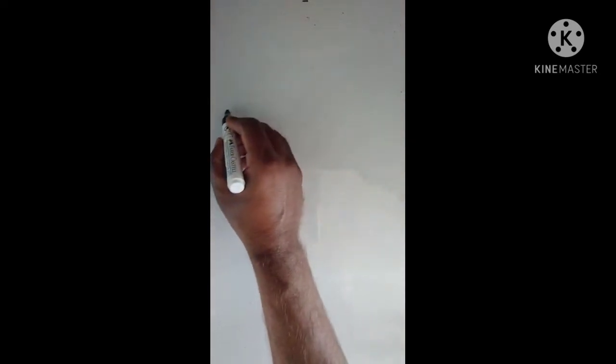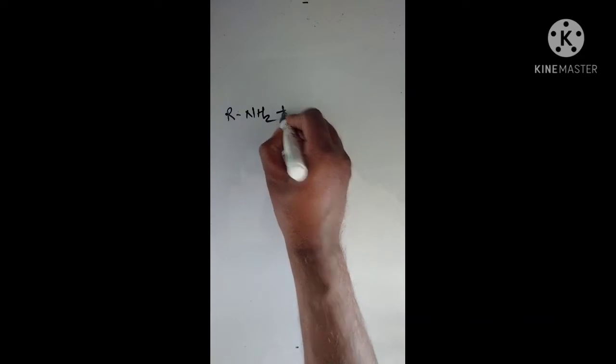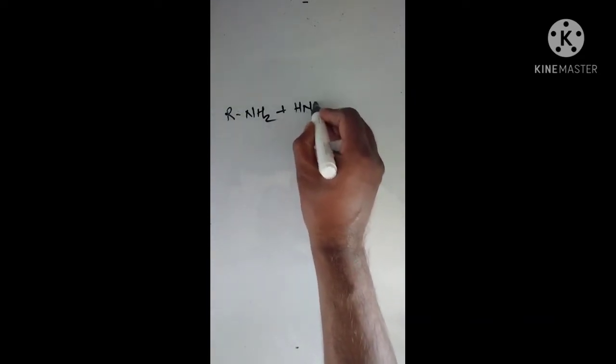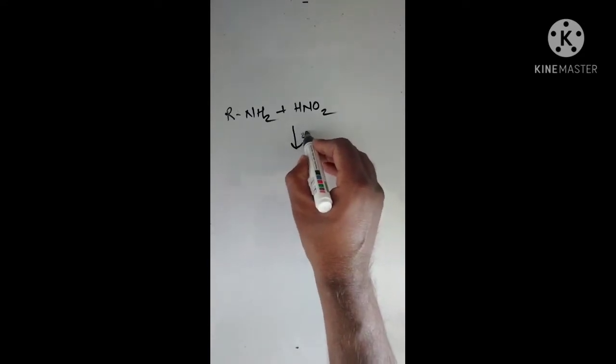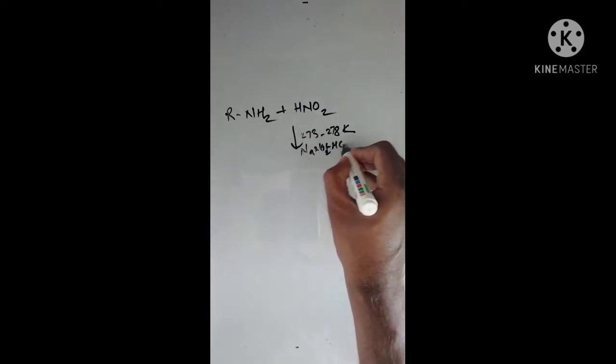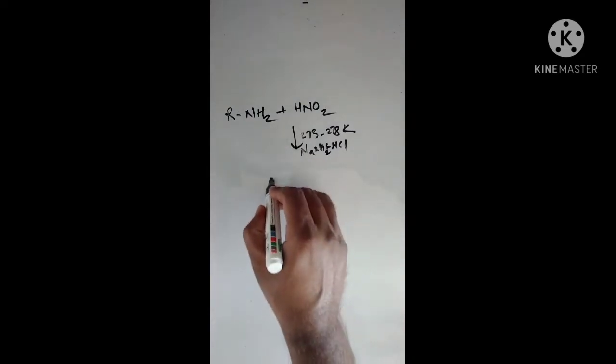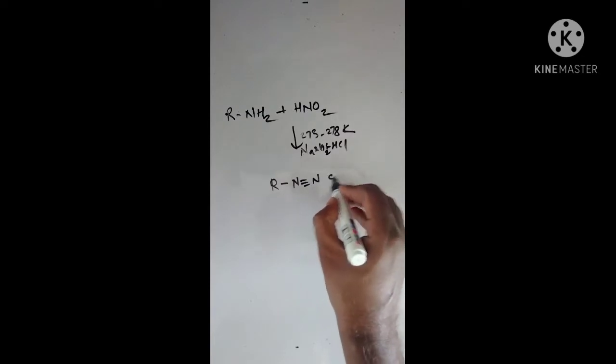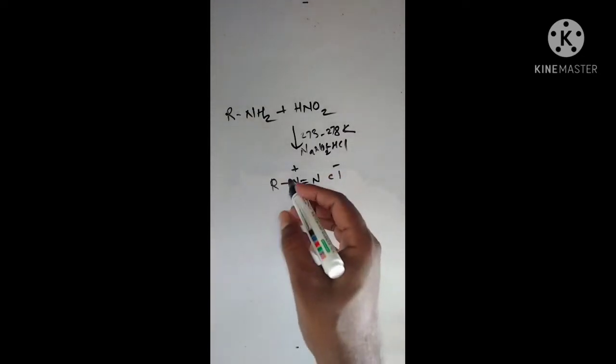Next is the reaction with nitrous acid. Generally, amines are bases — aromatic amines are nitrogenous bases. They will undergo reaction with nitrous acid. The acid and base react to form a salt. R-NH2 reacts with nitrous acid HNO2 at 273 to 278 Kelvin temperature in the presence of sodium nitrite plus HCl. The product formed is R-N≡N⁺ Cl⁻, which is alkyldiazonium chloride.